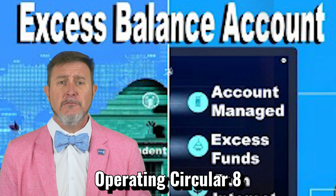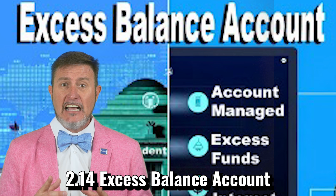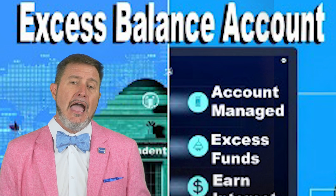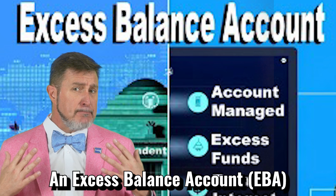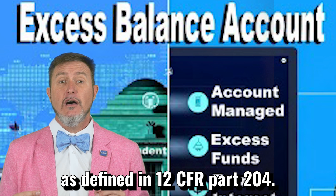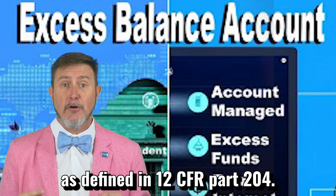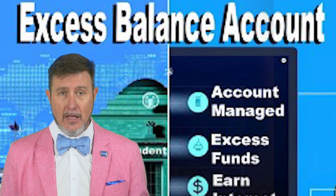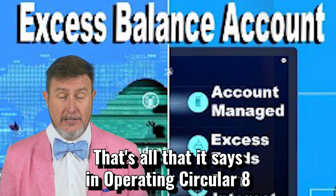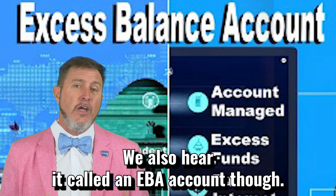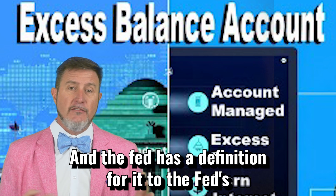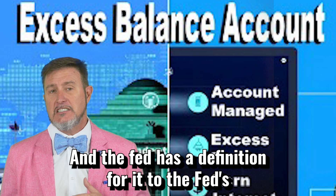Operating Circular 8, Section 214: Excess Balance Account. An Excess Balance Account as defined in 12 CFR Part 204 — really, that's all that it says in Operating Circular 8. We also hear it called an EBA account, and the Fed has a definition for it too.